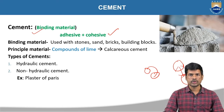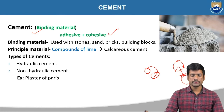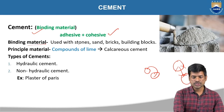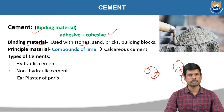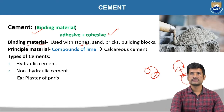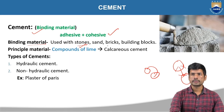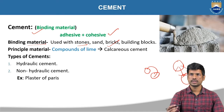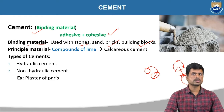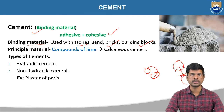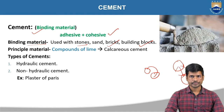That is why we are going to call it a binding material. This binding material is used with stones — we are going to use this cement to bind the stones, and next for bricks, for attaching bricks and other building blocks. To attach these stones, building blocks, or bricks, we are going to use the binding material.